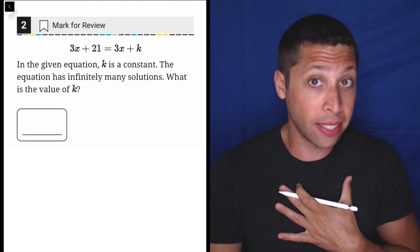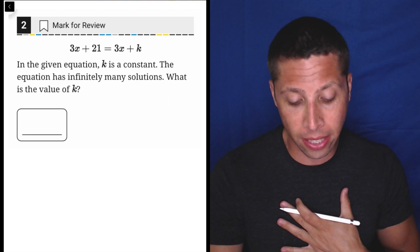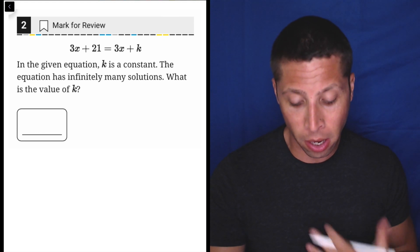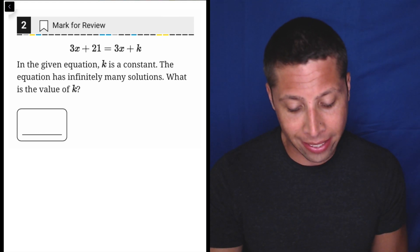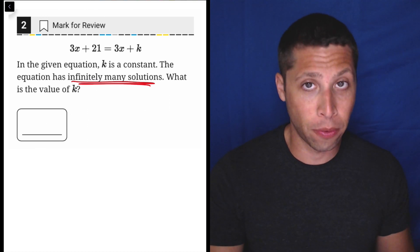They're giving us what I see as two equations, but more about that in a second. K is a constant, means it's just a number. The equation has infinitely many solutions. What is the value of K?